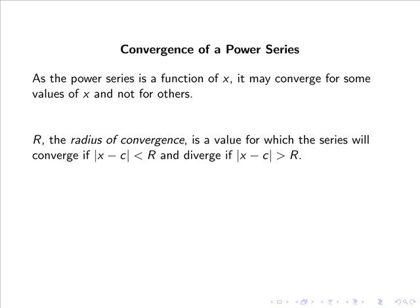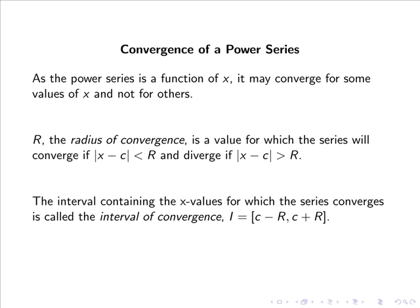The radius of convergence, denoted r, is a value for which the series will converge if the absolute value of x minus c is less than r, and diverge if the absolute value of x minus c is greater than r. The interval containing the x values for which the series converges is called the interval of convergence, and is given by i equals the interval from c minus r to c plus r.